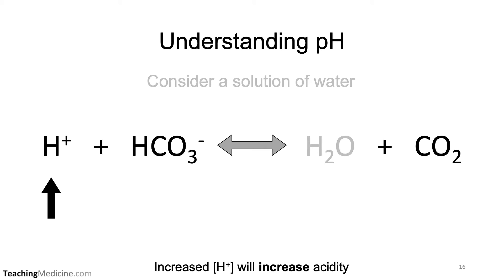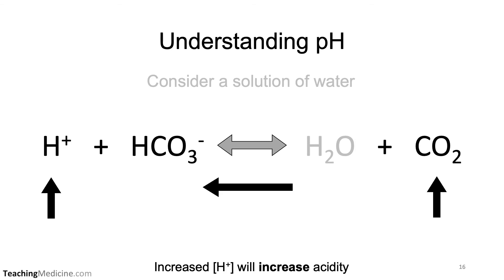Consider a situation where the hydrogen ion concentration was increased and the acidity level went up. In order for this to happen, the equation would need to shift left because we are increasing hydrogen ion concentrations. What changes in the other compounds could make this happen? Well, if bicarb levels were reduced, this would shift the equation left. Or if the carbon dioxide levels were increased, this would also shift the equation left and create more acid.